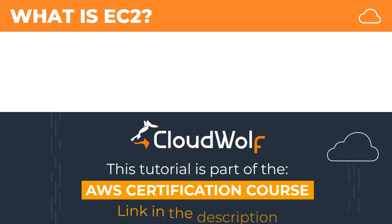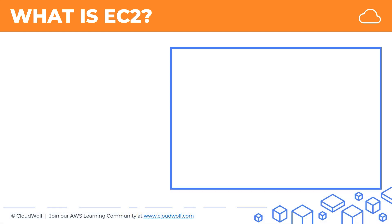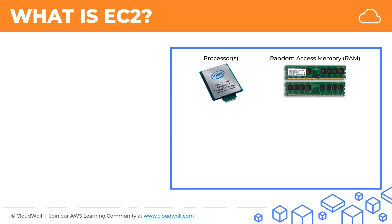Imagine an ordinary computer or an ordinary server and the key components that make it tick. We have a processor — absolutely crucial to have a processor; without that, nothing will work. We have random access memory, or RAM for short. Also, without this, nothing's going to work.